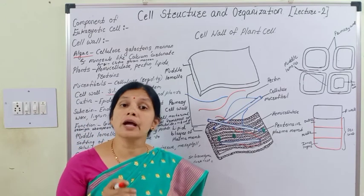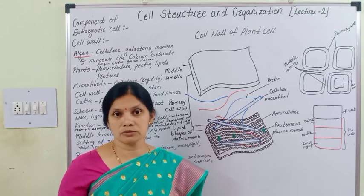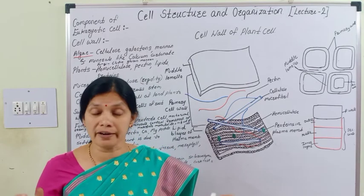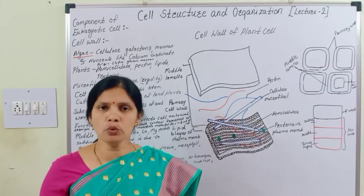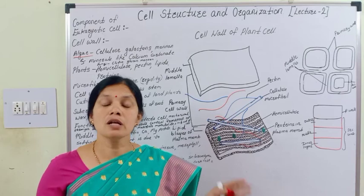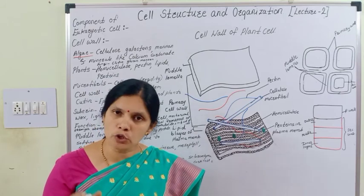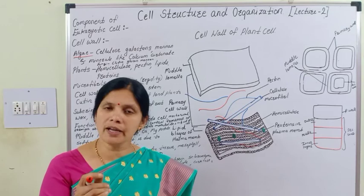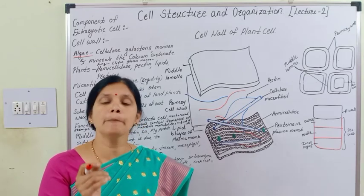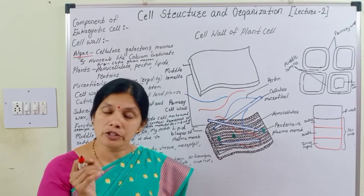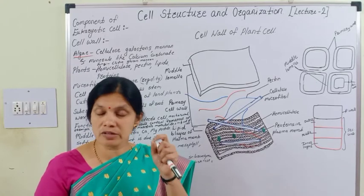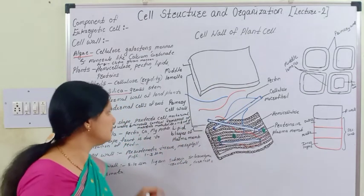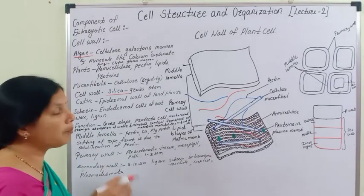Whenever there is cytokinesis — we already know that during cell division, from one parental cell two daughter cells are formed — at that time firstly karyokinesis occurs, meaning division of the nucleus. After completion of nuclear division, cytokinesis takes place, and during cytokinesis the cell plate formation takes place. From this cell plate, the first layer of the cell wall to form is the middle lamella.